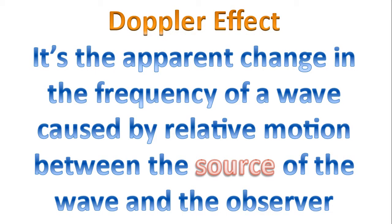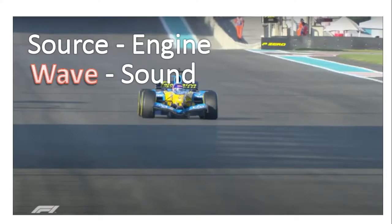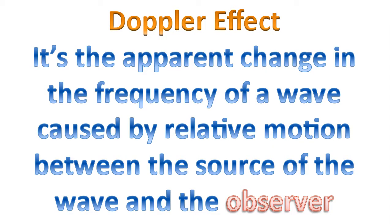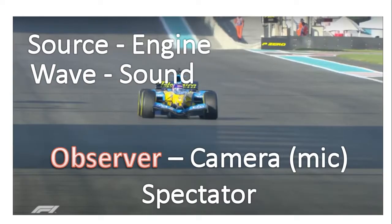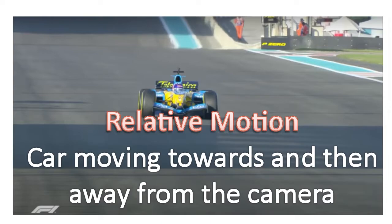For this example, what was the source? The source was the engine. What was the wave? For this example, the wave is sound. And the observer was the actual camera, or mic, or the spectator. Now the key word here is relative motion. There's relative motion because the car is moving towards and then away from the camera or from the spectator.